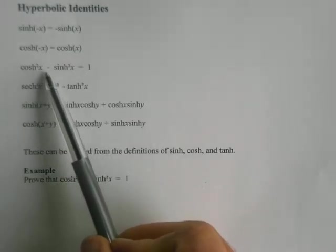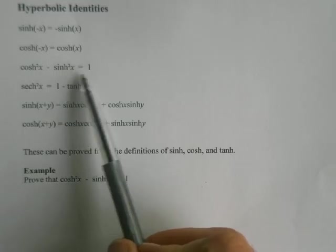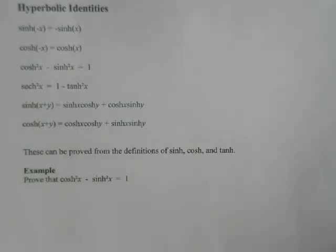Here it's cosh²x - sinh²x = 1. So there are similarities, and just like with the trig identities, we need to be able to prove them. I'm going to prove one for you.